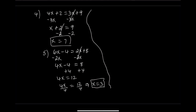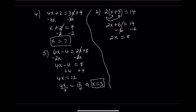Equation 6: 2 times the quantity x plus 3 equals 14. Step 1: distribute — 2 times x plus 2 times 3 — which gives 2x plus 6. Now we have 2x plus 6 equals 14. Step 2: subtract 6 from both sides — 2x equals 8. Step 3: divide by 2 — x equals 4.